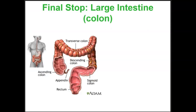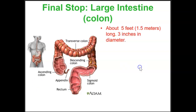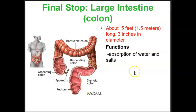The final stop on our tour through the digestive system is the large intestine, also known as the colon. It includes the ascending, transverse, and descending colon. The large intestine is about five feet long — 1.5 meters — and about three inches in diameter. It functions in absorption of water and salts, and it also stores and eliminates feces.